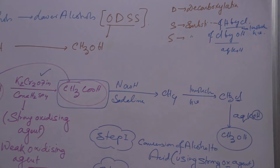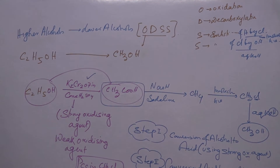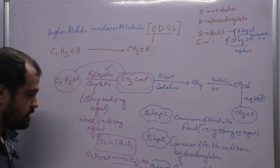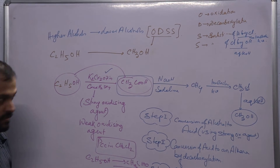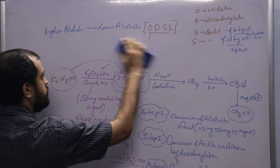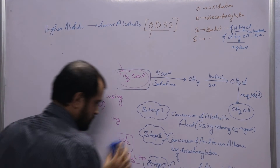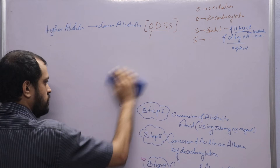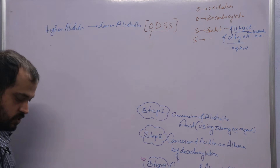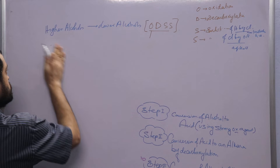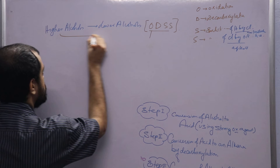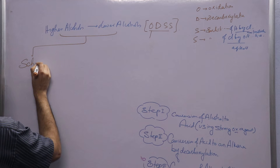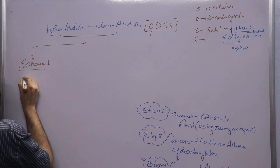Now we will convert lower alcohol to higher alcohol. Before that, we need to know that this is one of my favorite processes. There is another method which you will find in your books. There are actually two schemes. Scheme 1 is what I have discussed — that is ODDS. There is also Scheme 2.